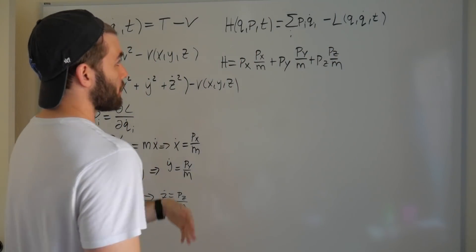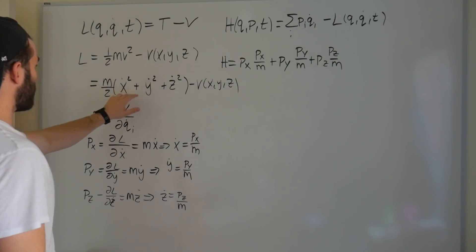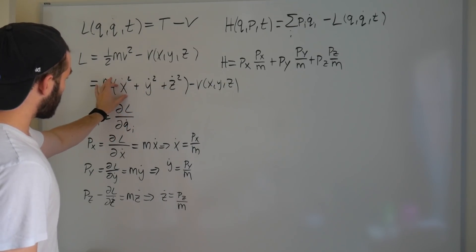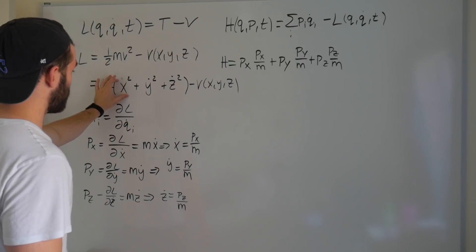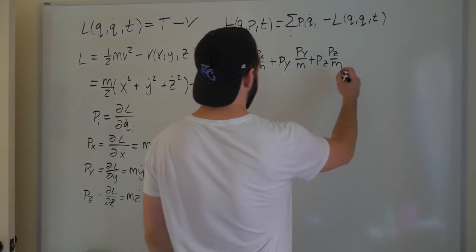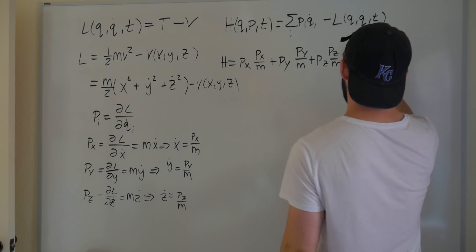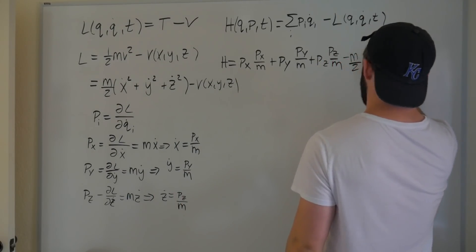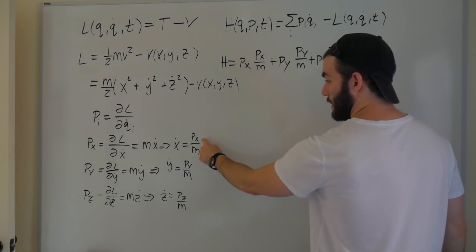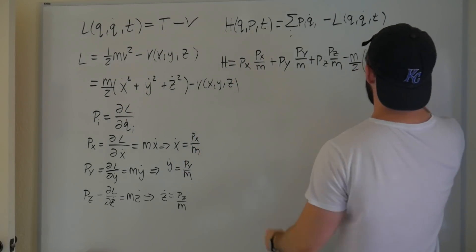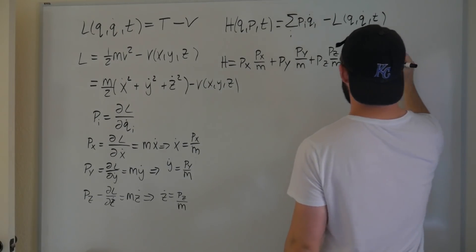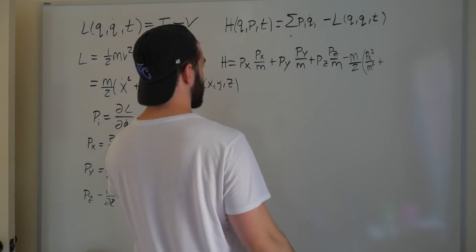Minus the Lagrangian. Now the same thing goes with the Lagrangian. Here, we said that it's x dot squared plus y dot squared plus z dot squared, which means that we're going to be substituting in x dots in terms of our momentum again. So this is minus m over 2. x dot squared is just going to be px squared over m squared.